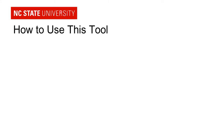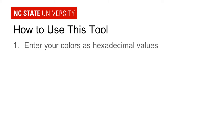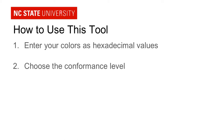So how do you use this tool? You simply go to the website — I'll provide the address in just a minute — and you enter all of your colors as hexadecimal values. Then you choose the conformance level you want to evaluate against. In WCAG 2, there are different conformance levels you can adhere to, and for color contrast you can either adhere to level AA or level AAA, with level AAA being the most accessible.